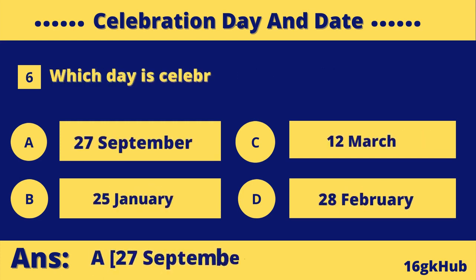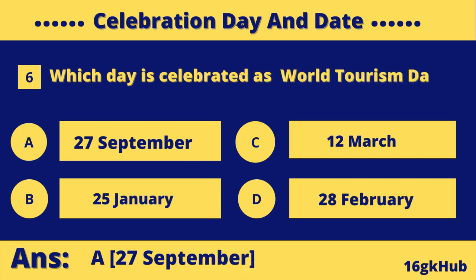Which day is celebrated as World Tourism Day? Option A: the 27th of September. Option B: 25th of January. Option C: the 12th of March. Option D: 28th of February. The correct answer is Option A: 27th of September.